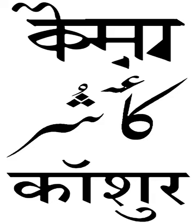Future tense intransitive verbs are formed by the addition of suffixes to the verb stem. The future tense of transitive verbs, however, is formed by the addition of suffixes which agree with both the subject and direct object according to number, in a complex fashion.